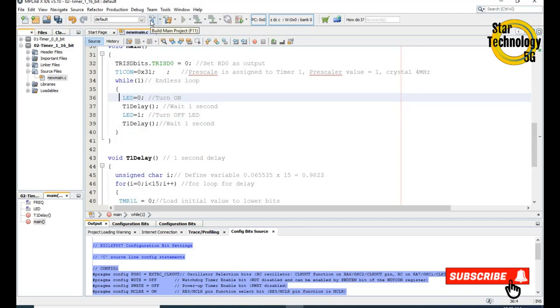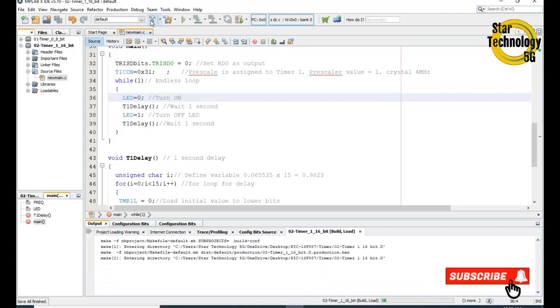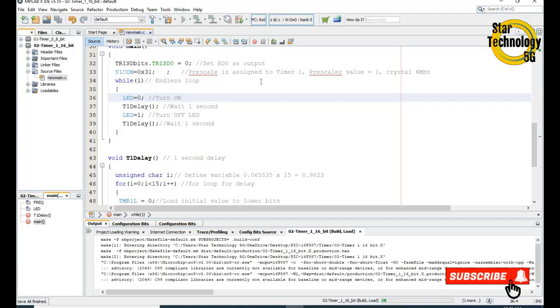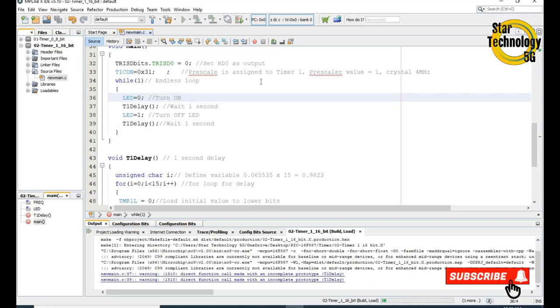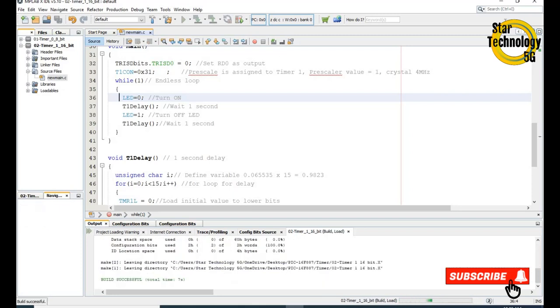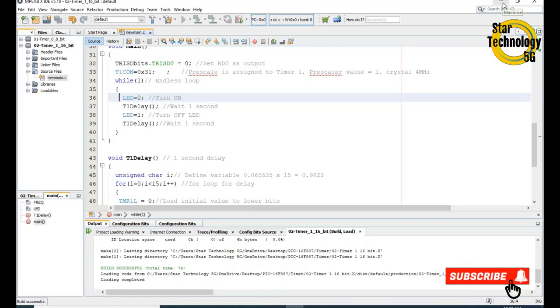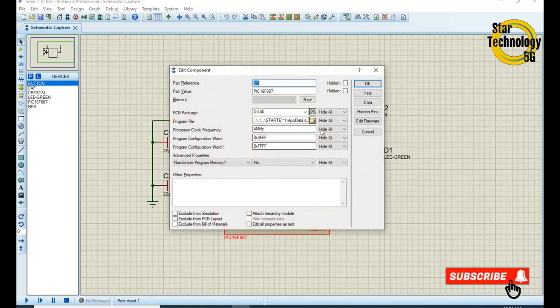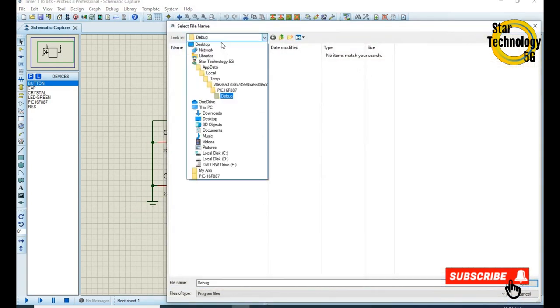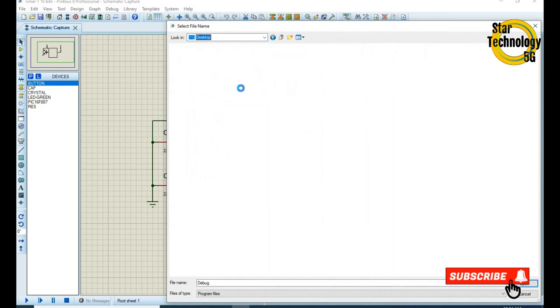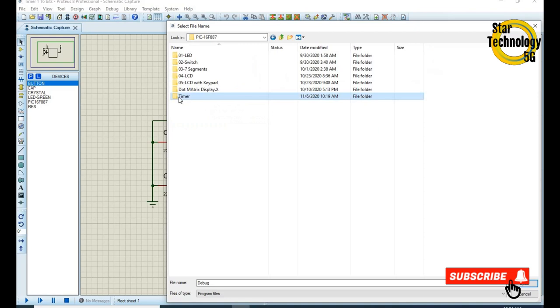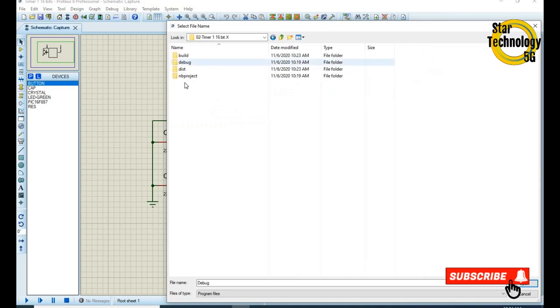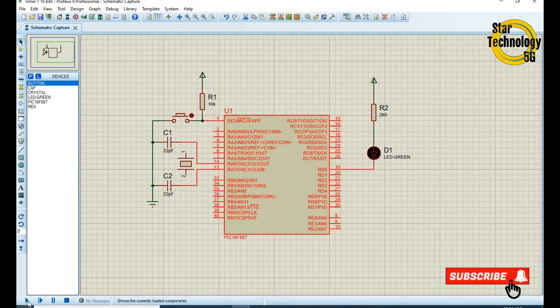Now we will create its hex file. Now we will load this file into our project. Double-click on the controller and select the hex file. Click on run simulation.